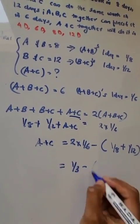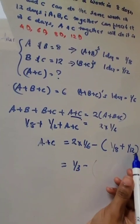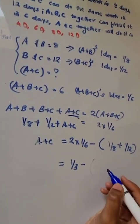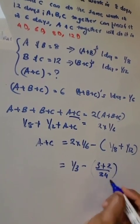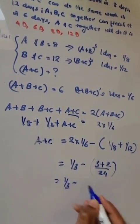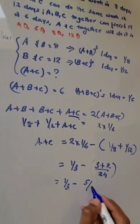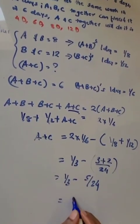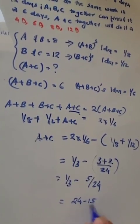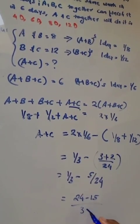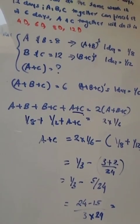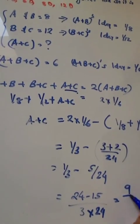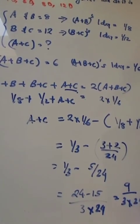1 by 3 minus 1 by 8 plus 1 by 12. So here the LCM is 24. Then 3 plus 2 by 24, that is 1 by 3 minus 5 by 24. That is 24 minus 15 by 3 into 24. So that is 9 by 3 into 24.